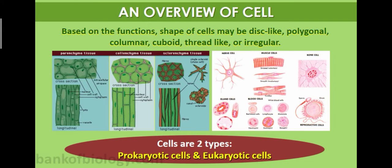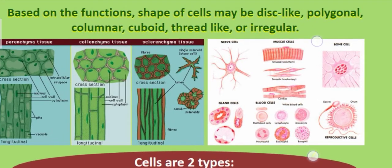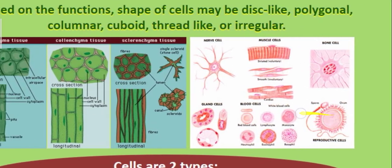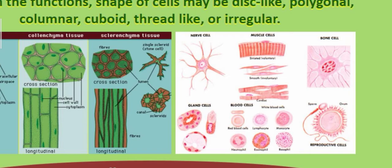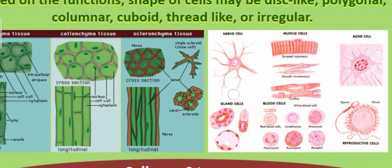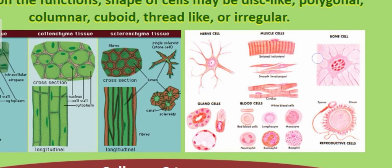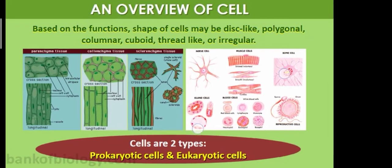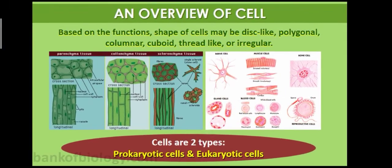On the basis of their function, the shape of cells may be disc-like, polygonal, columnar, cuboidal, thread-like, or irregular. As you see in the picture, different types of cell structures are shown — bone cells, reproductive cells, blood cells, nerve cells — they may be polygonal, columnar, cuboidal, thread-like, or irregular.